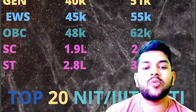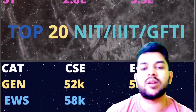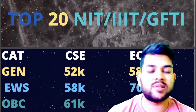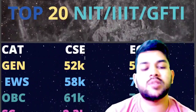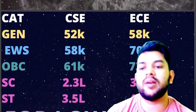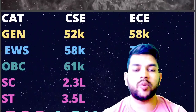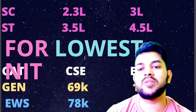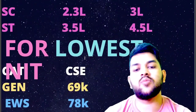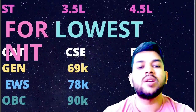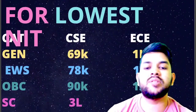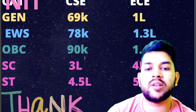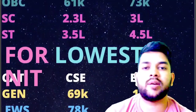For top 20 Triple IT: General — CS 52,000 and EC 58,000; EWS — 58,000 and 70,000; OBC — 61,000 and 73,000; SC — 2.3 lakh and 3 lakh; ST — 3.5 lakh and 4.5 lakh. For the lowest possible Triple IT: General — 69,000 and 1 lakh; EWS — 78,000 and 1.3 lakh; OBC — 90,000 and 1.4 lakh; SC — 3 lakh and 4.4 lakh; ST — 4.5 lakh and 5.5 lakh.